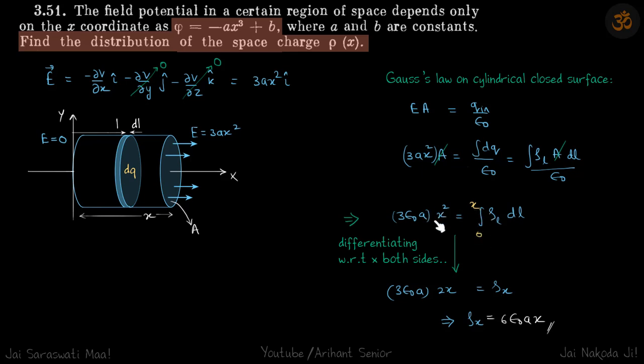We are going to differentiate it with respect to x on both sides. So this term will simply come out in the form of x, so right side will become ρ_x and left side will be differentiated and it will be 3ε₀·2x, which will give the ρ_x as 6ε₀ax, which is our answer.